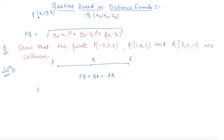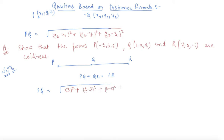First we will find out the distance PQ using the distance formula written above. So: 1 minus (minus 2) is 3, squared; plus 2 minus 3 is minus 1, squared; plus 3 minus 5 is minus 2, squared. That gives us 3 squared plus 1 squared plus 2 squared, which is 9 plus 1 plus 4, giving root 14.